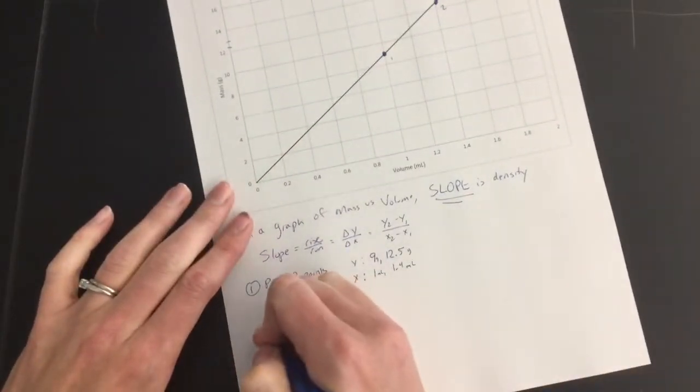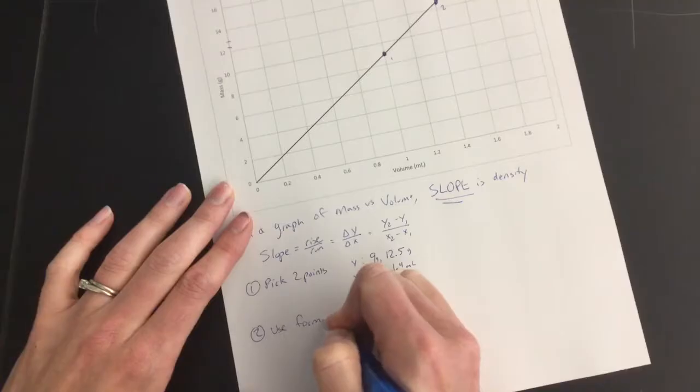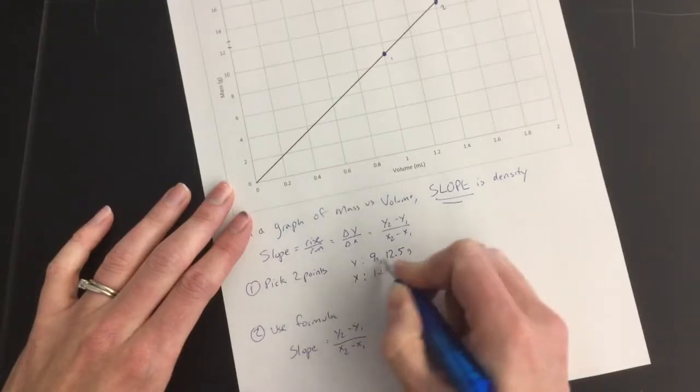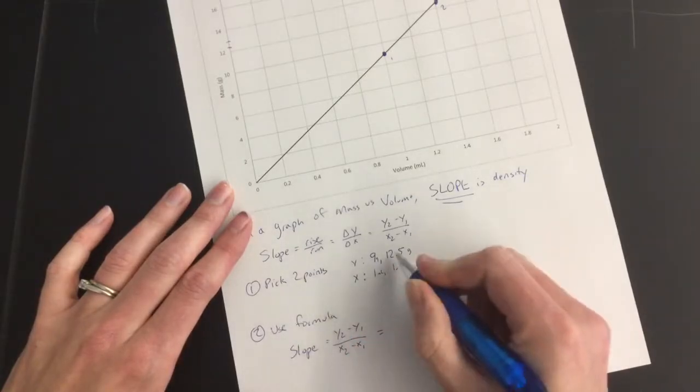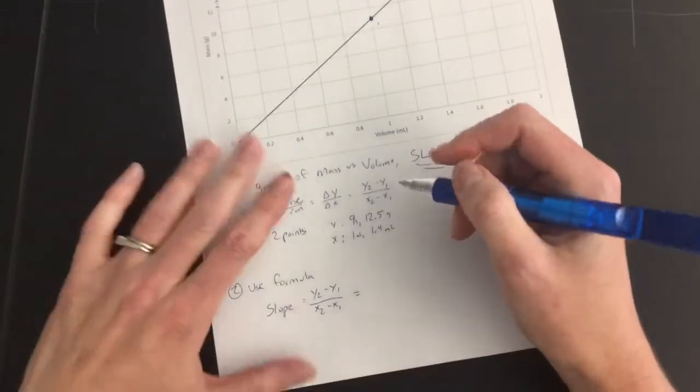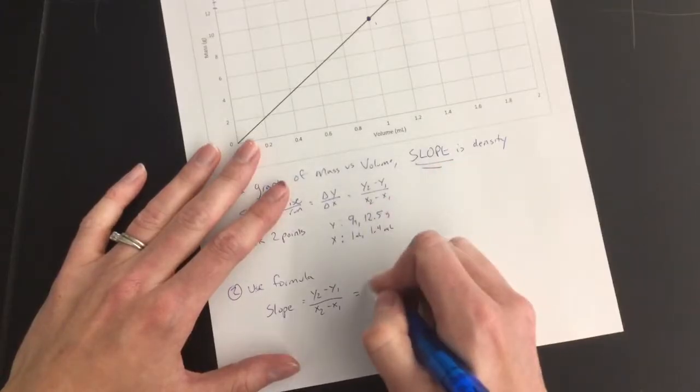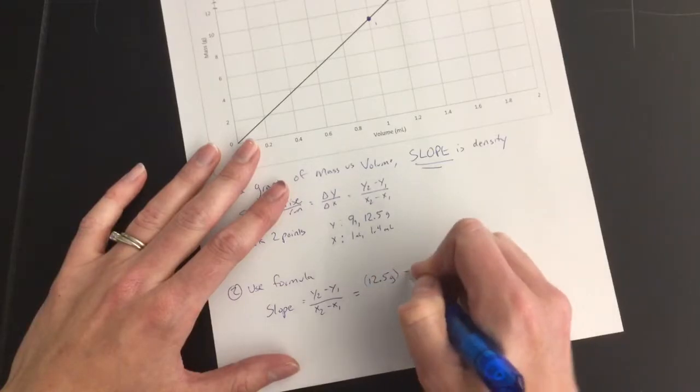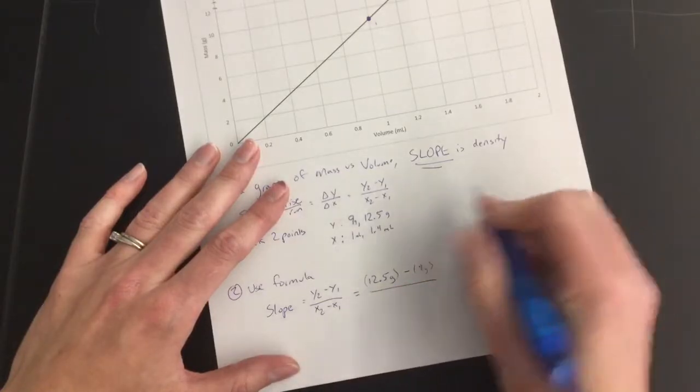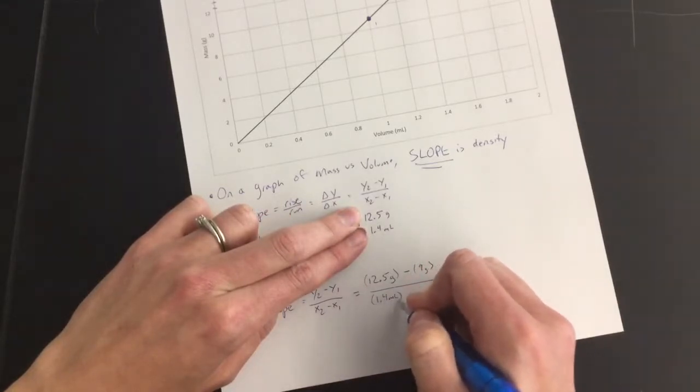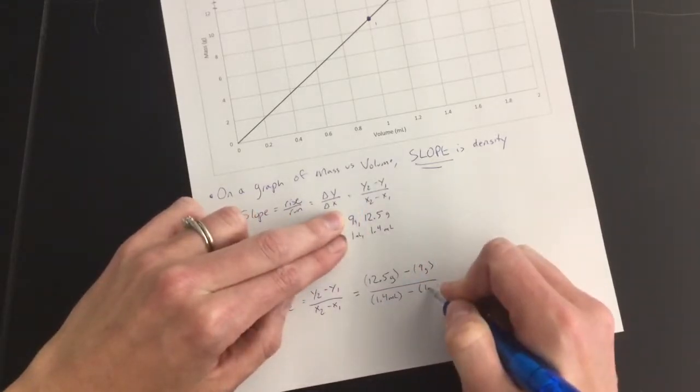So now, all I have to do is use my formula. I'm going to have an easier time writing the one that says y2 minus y1 over x2 minus x1, and as long as I have my numbers in the same place, it doesn't matter which one comes first. But since I don't want to have to divide with negative, I'm going to put the bigger number in front. So I'm going to do 12.5 grams minus 9 grams, and then I'm going to divide that, and the one that goes with the 12.5 needs to go under, so 1.4 milliliters minus 1 milliliter.